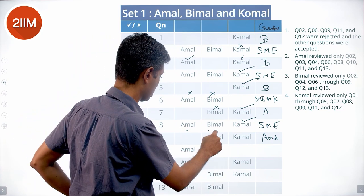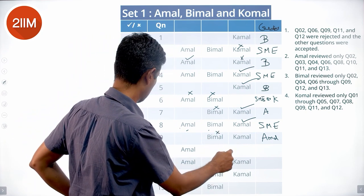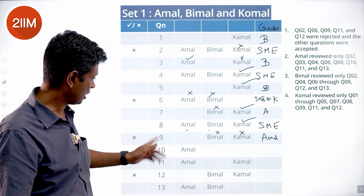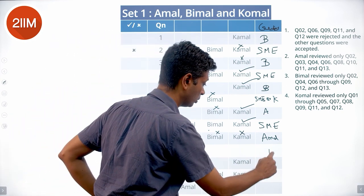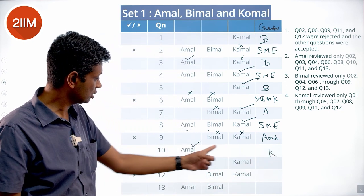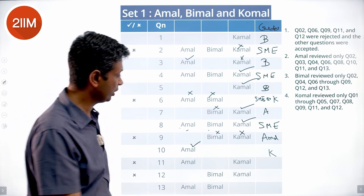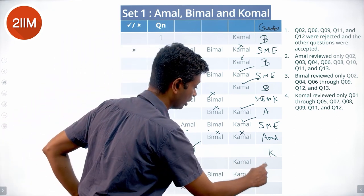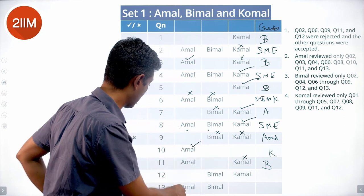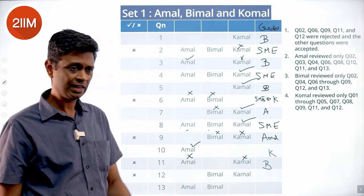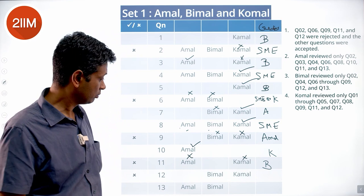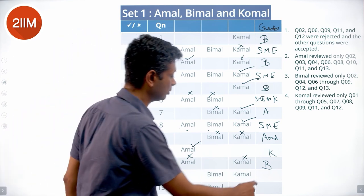Q9 was reviewed by Bimal and Komal, so it was created by Amal. Bimal rejected it and Komal also rejected it. For another question reviewed by Amal and Komal — that means it was created by Bimal; Komal rejects it, then it goes to Amal, and Amal also rejected it.